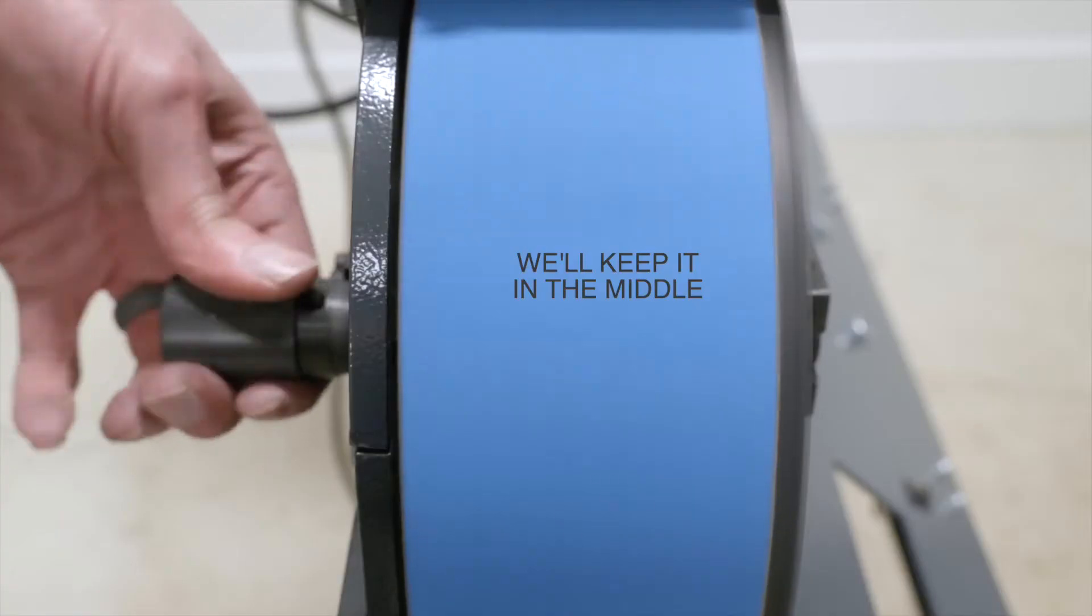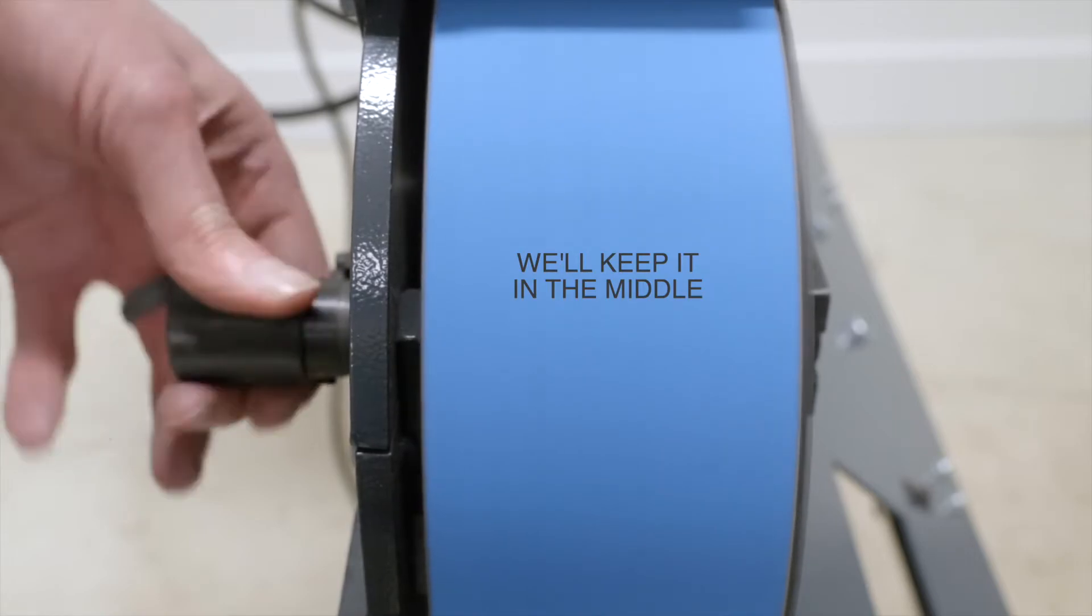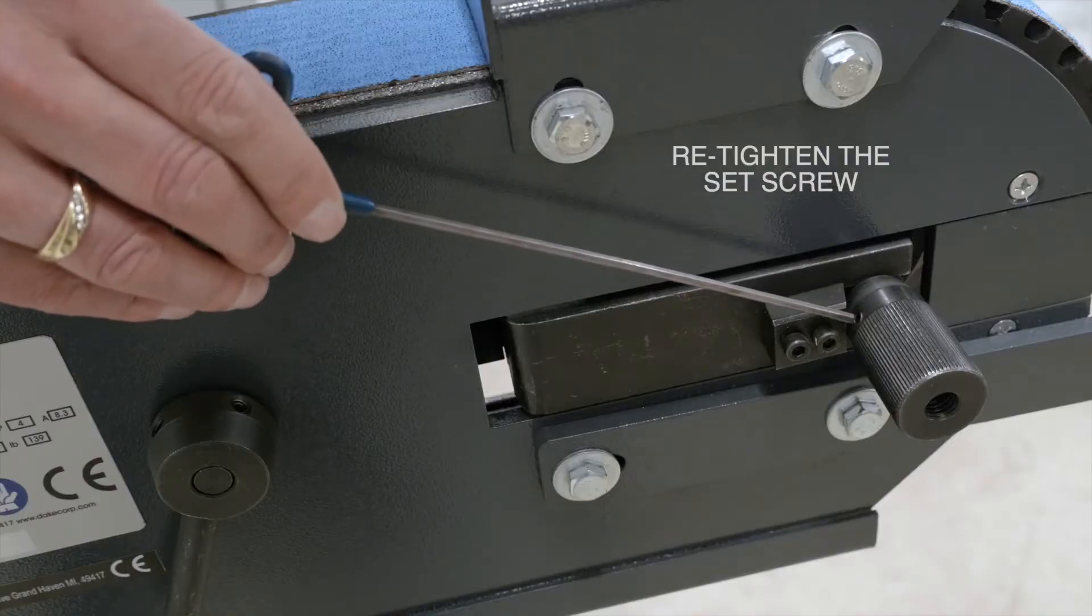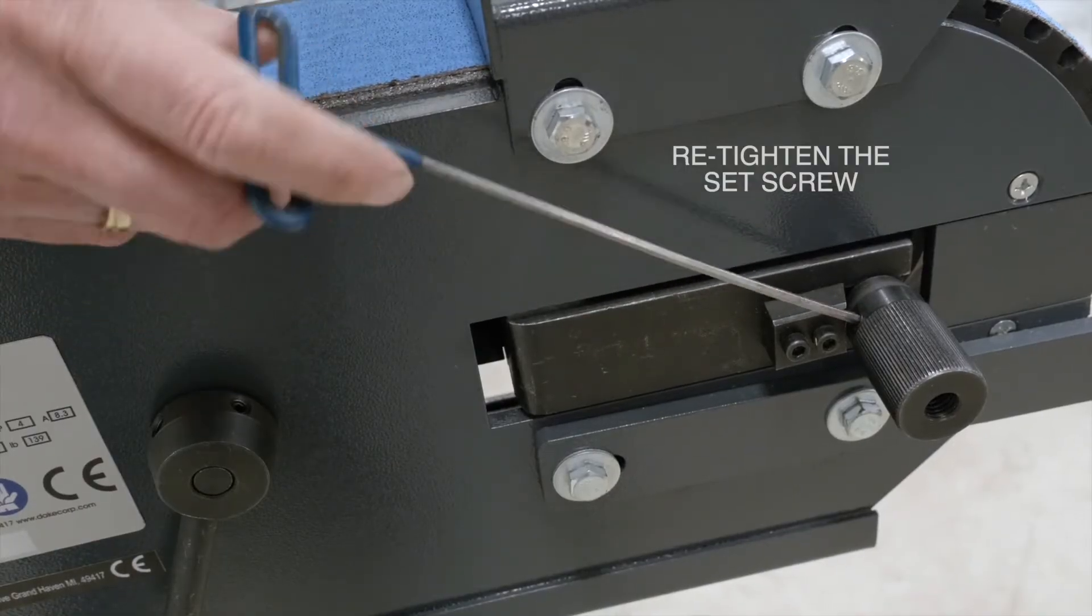In this case, we'll just leave our belt in the middle. And the last step is to make sure you re-tighten the set screw.